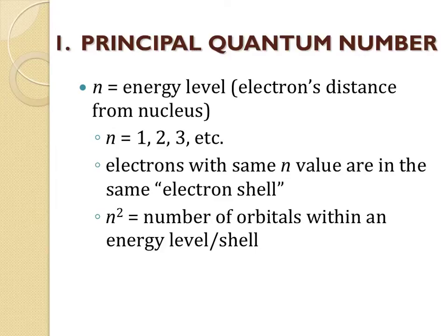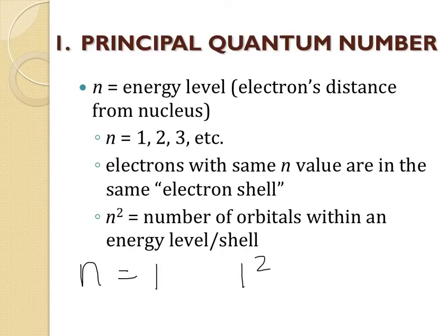Let's talk about these quantum numbers in more detail. First, the principal quantum number, n — this is our energy level, very similar to the Bohr model of the atom. Electrons that have the same n value are in the same energy level, or electron shell. The higher the number for n, the farther the electron can be from the nucleus. If you take your value for n and square it, that will tell you how many orbitals you can have within each energy level. So for example, in the first energy level, n equals 1. If you square that, that equals 1, and that tells you you can have one orbital within that energy level.